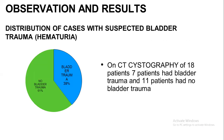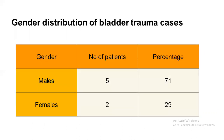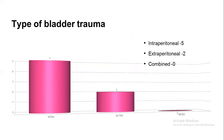These pie charts show the distribution of cases with suspected bladder injury. On CT cystography of 18 patients, 7 patients had bladder injury and 11 patients had no bladder injury. Gender-wise distribution of bladder trauma cases: out of 7 cases, 5 are males and 2 are females. Regarding type of bladder trauma, 5 are intraperitoneal bladder trauma and 2 are extraperitoneal.